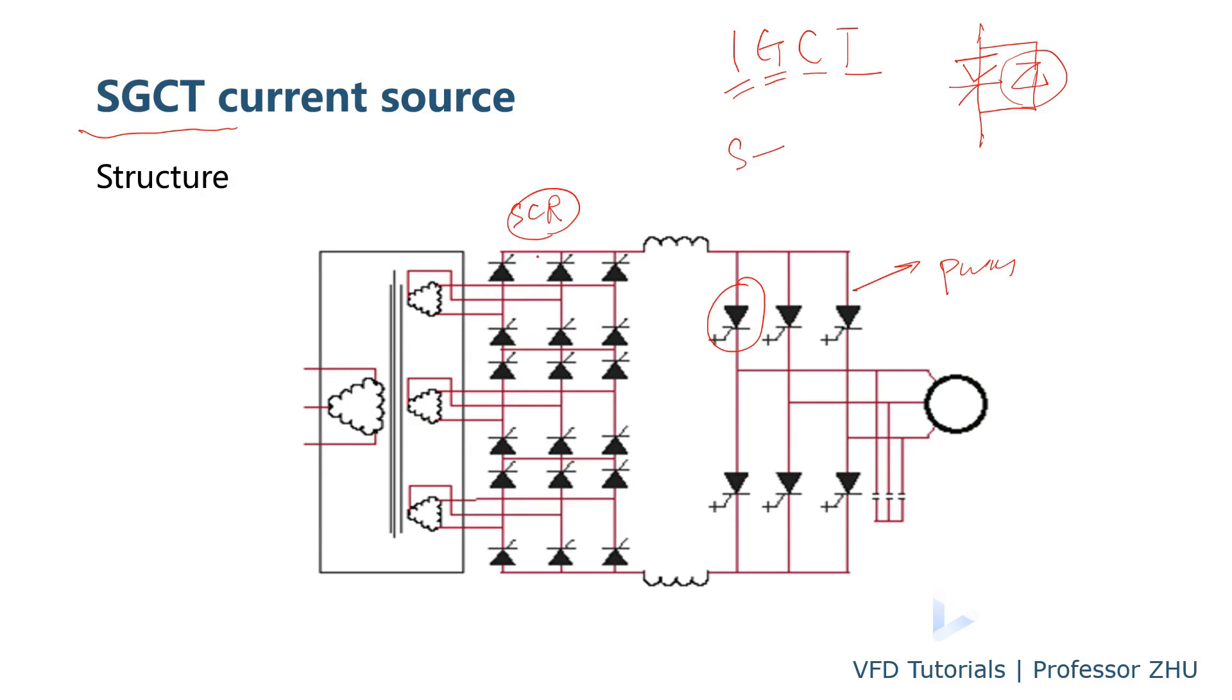For SCR you can have this topology like 18-pulse. So you have two sets of rectifier. And each secondary you have a 20 degree phase shift. And you have an 18-pulse rectifier.